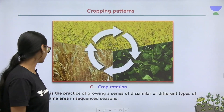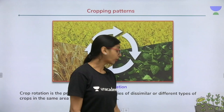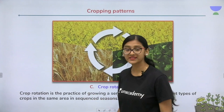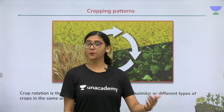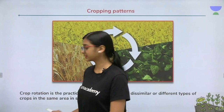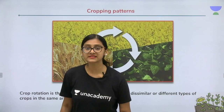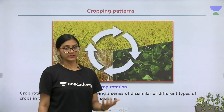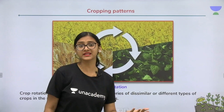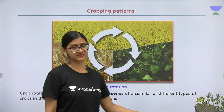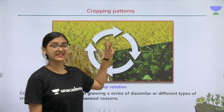In order to prevent this, crop rotation patterns can be followed. Crop rotation is the practice of growing a series of similar or different types of crops in the same area in a sequenced season. Usually leguminous plants are grown in the rotation because they increase the nitrogen content and improve the nutrient quality of the soil. For example, rice and wheat, or maize and mustard, can be grown in crop rotation.